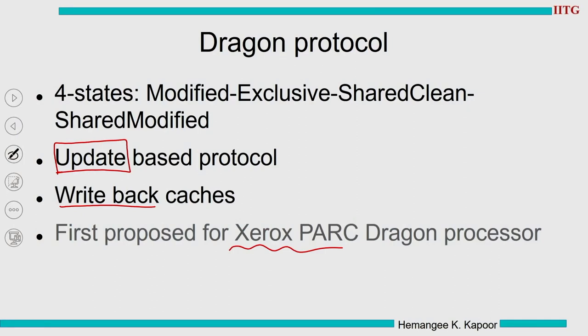What are the states? There is state M for Modified — you go into state M only when you change the data item, so that holds for the Dragon Protocol too. Then we have state E, similar to the MESI protocol: Exclusive means this is the only sharer in the system of this data block with no other copies, but E does not give you permission to write.